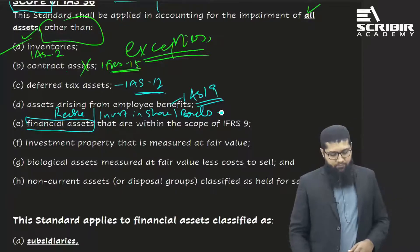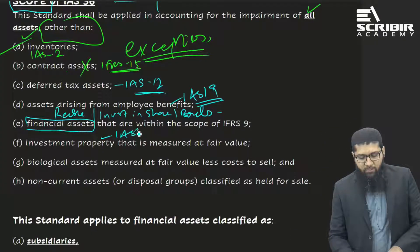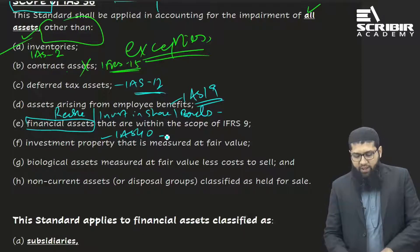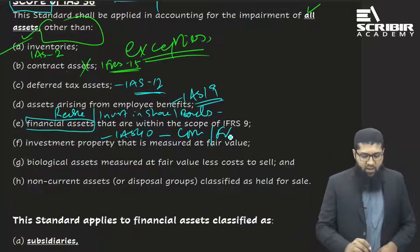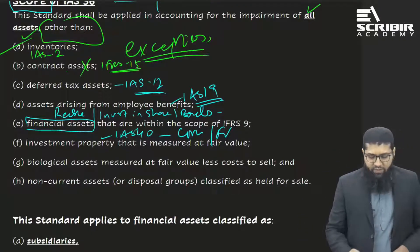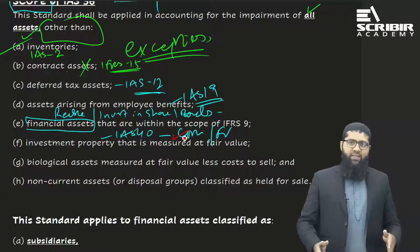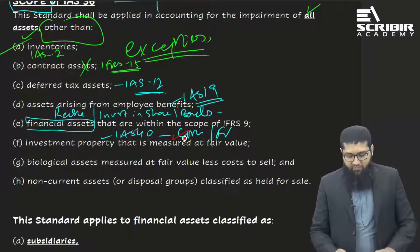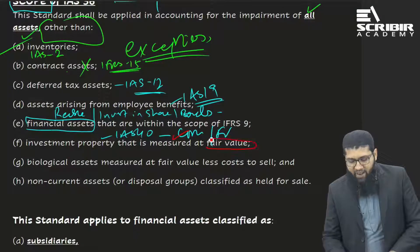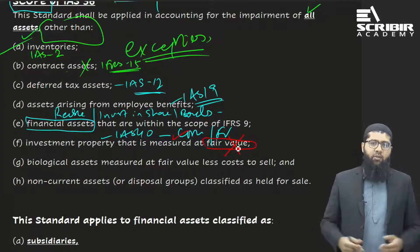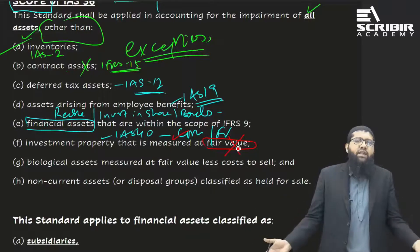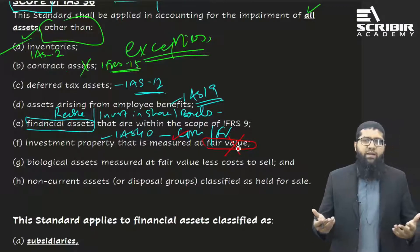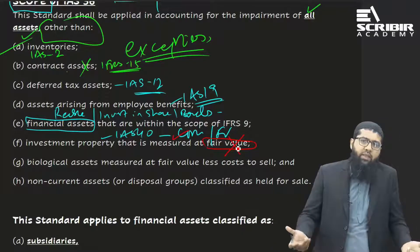For investment property under IAS 40, you have a choice to carry it under the cost model or the fair value model. If the investment property is under the cost model, IAS 36 is applicable. But if it is under the fair value model, IAS 36 won't be applicable — because it is already being measured at fair value and the gain or loss is already taken to the P&L.